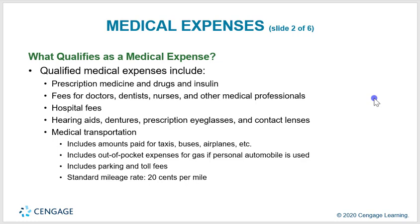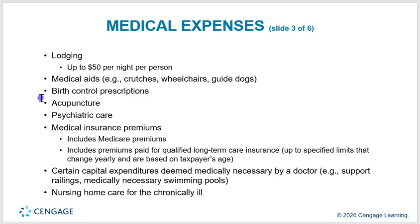Qualified medical expenses include prescription medicine, drugs, and insulin; fees for doctors, dentists, nurses, and other medical professionals; hospital fees; hearing aids; dentures; prescription eyeglasses; contact lenses; and transportation including taxis, buses, and airplanes. Out-of-pocket expenses for gas and personal auto use, parking, and toll fees are included, as is the standard mileage rate of $0.20 per mile. Lodging up to $50 per night is deductible, along with medical aids such as crutches, wheelchairs, and guide dogs; birth control prescriptions; acupuncture; psychiatric care; Medicare premiums; and premiums for qualified long-term care insurance. Certain qualified expenditures deemed medically necessary by a doctor and nursing home care for the chronically ill are also deductible.